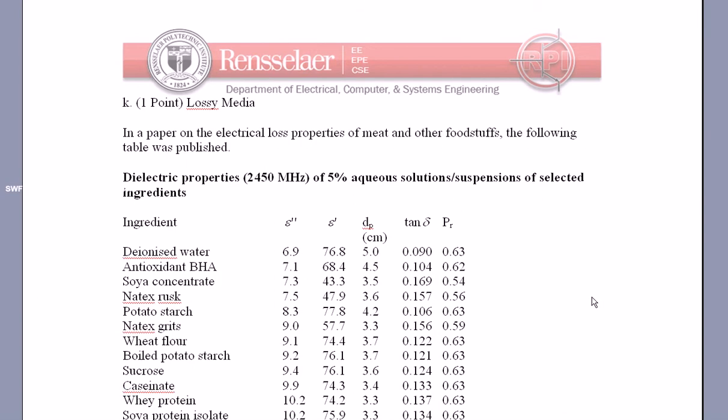So in a paper on the electrical loss properties of meat and other foodstuffs, the following table was published. Dielectric properties at 2.45 gigahertz or 2450 megahertz of 5% aqueous solutions/suspensions of selected ingredients.